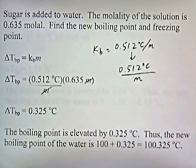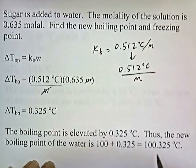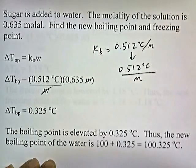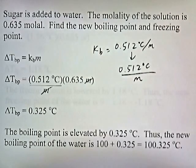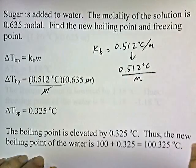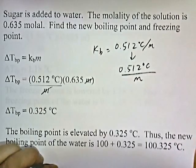Thus, the new boiling point of the water is not 100, but 100 plus 0.325. So the new boiling point is 100.325 degrees Celsius. The boiling point has been elevated by a tiny amount — it doesn't boil at 100; it boils at slightly above 100. Now let's figure out the new freezing point.